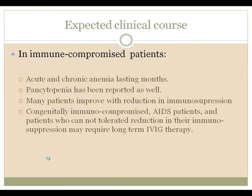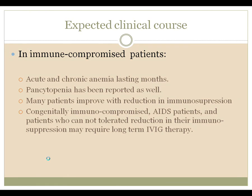In an immunocompromised person, this can last for months. They can have not only anemia, but also thrombocytopenia and leukopenia — full-blown pancytopenia. Many patients will improve with reduction of immunosuppression, so your organ transplant or bone marrow transplant patient may get better by turning things down. If that's tolerable without other complications, that's the first step in treatment. If not, therapy with IVIG or other kinds of adoptive immunity may well be needed.